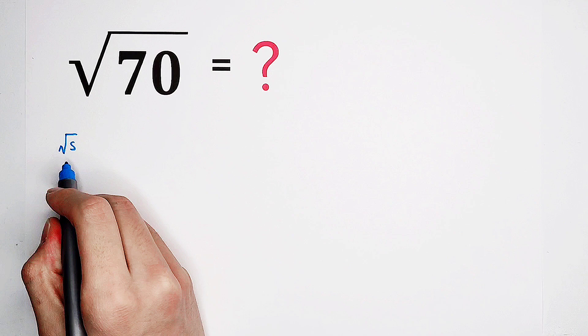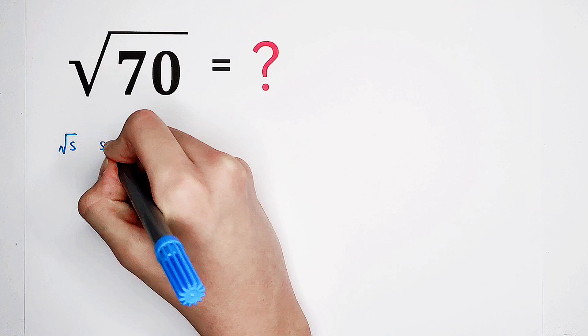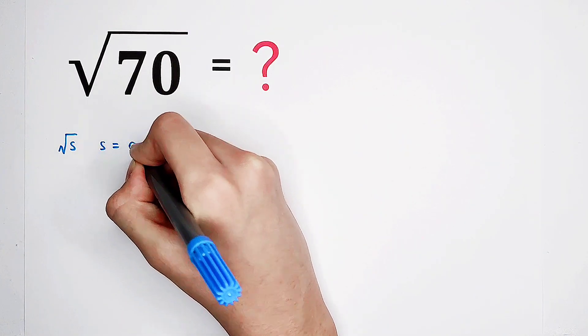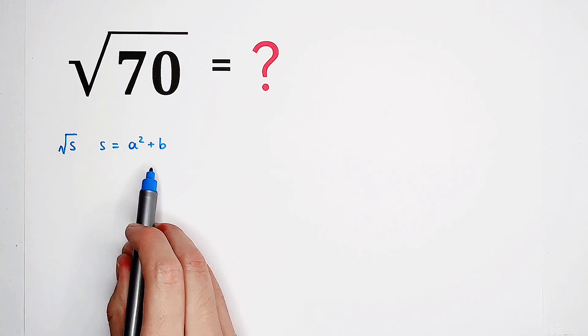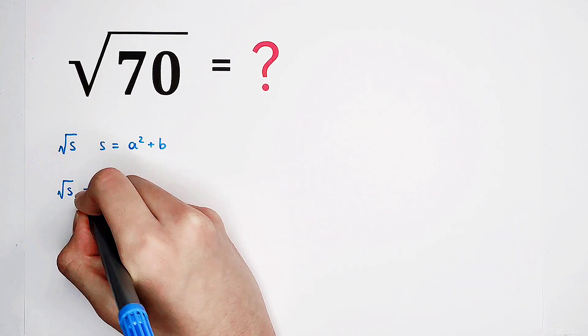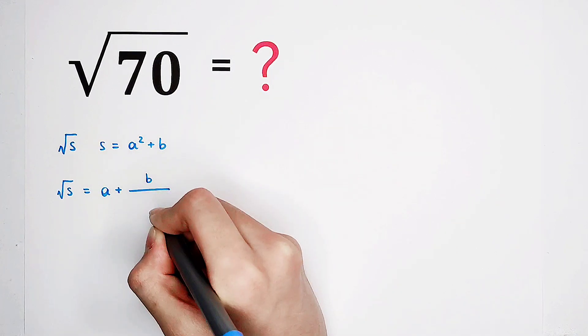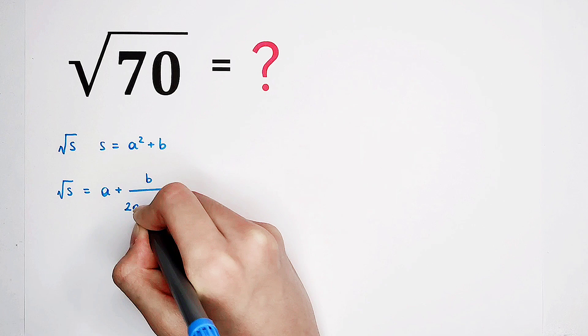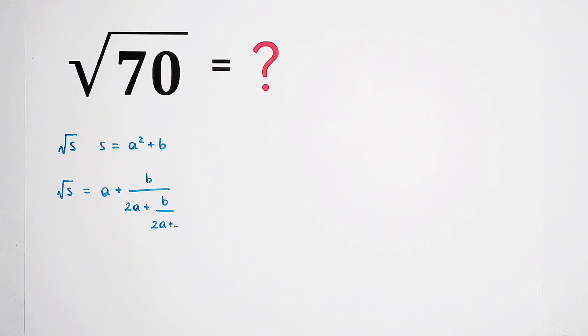For approximating the square root of s, where s is a positive integer, if s equals a squared plus b, where a and b are positive integers and b is smaller than a squared, then square root of s is a plus b over 2a plus b over 2a plus b over 2a, and so on. The proof is very easy. I think you can prove it yourself.